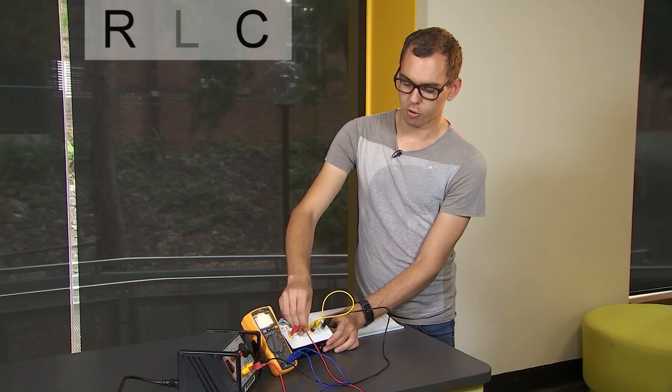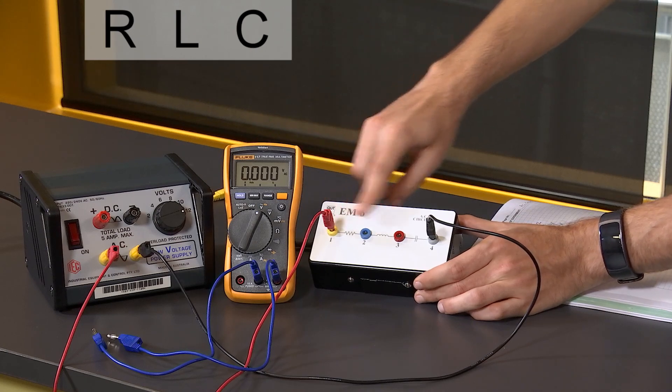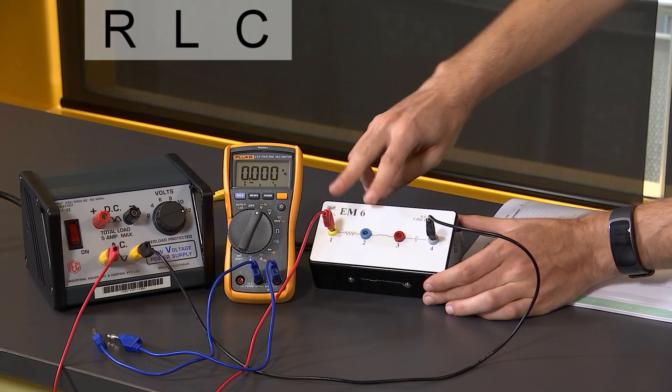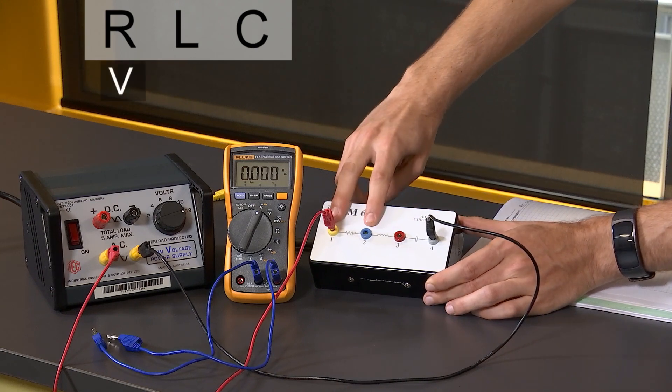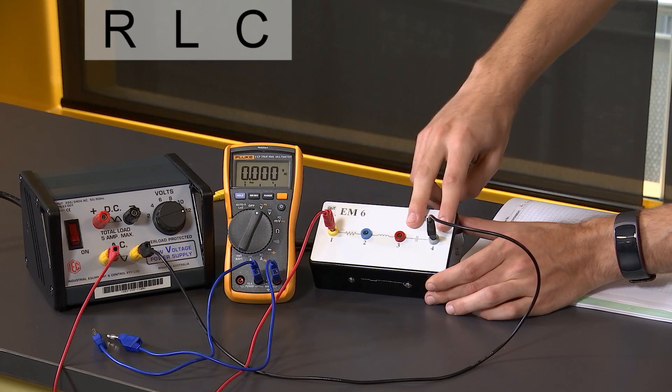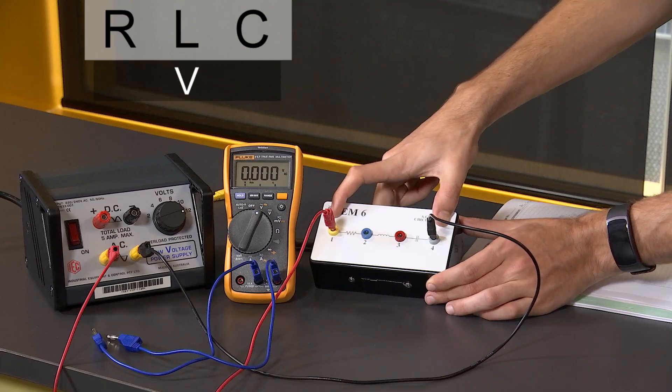Finally I'm going to remove the short circuit and I have an RLC circuit, and once again measure the voltage drop across one and two for the resistor, two and three for the inductor, three and four for the capacitor, and one and four for the combination.